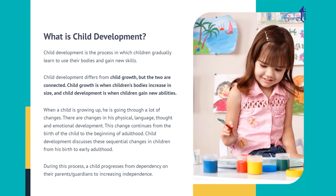When a child is growing up, they go through a lot of changes — changes in physical, language, thought, and emotional development. This change continues from the birth of the child to the beginning of adulthood. Child development discusses these sequential changes in children from birth to early adulthood, during which a child progresses from dependency on their parents or guardians to increasing independence.